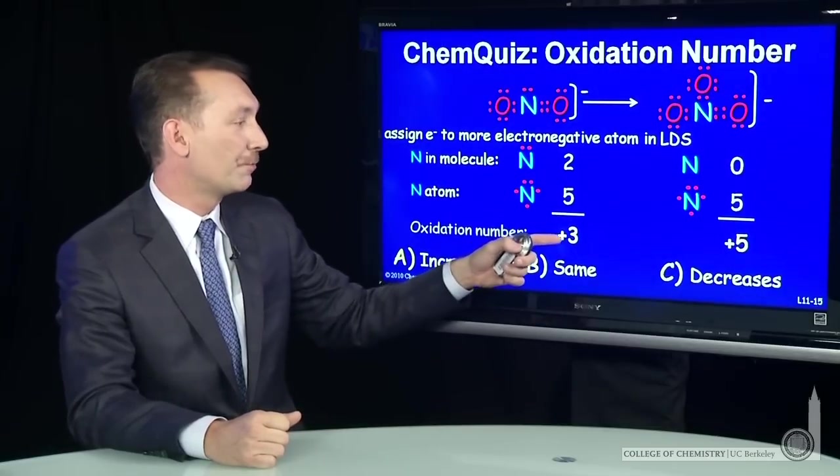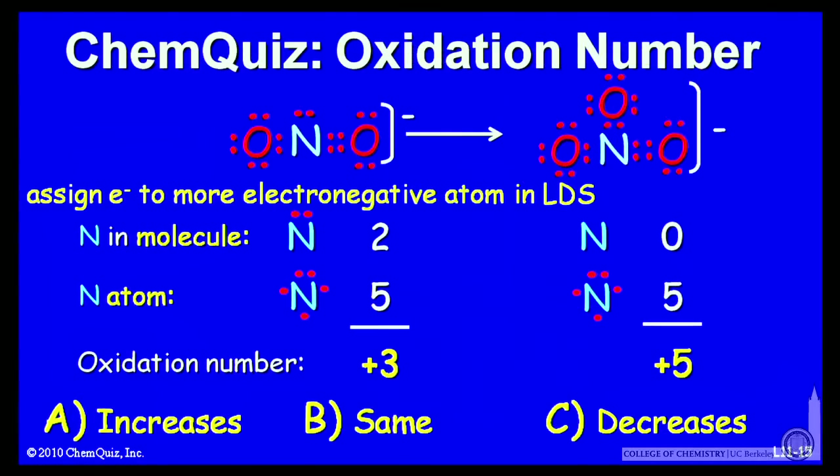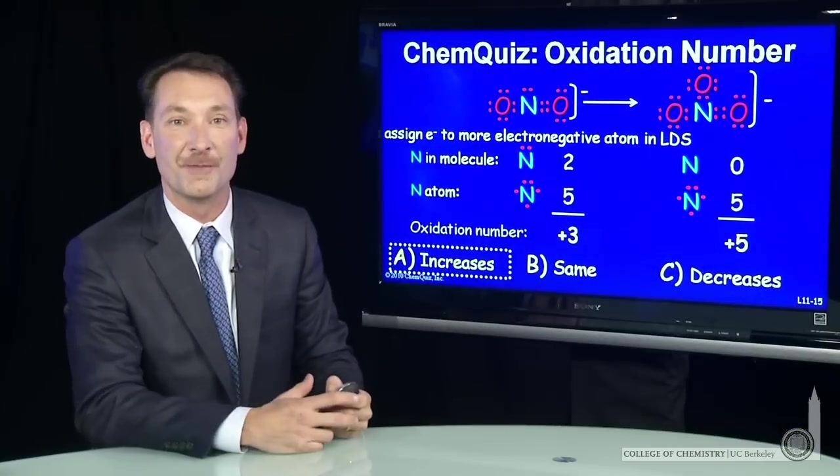So the oxidation number goes from plus three to plus five, an increase in oxidation number. The correct answer here, the oxidation number increases when you go from NO2- to NO3-.